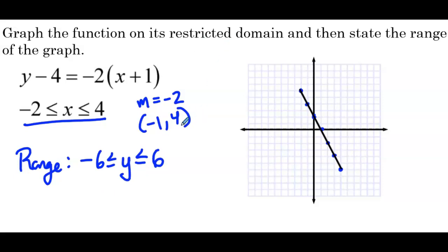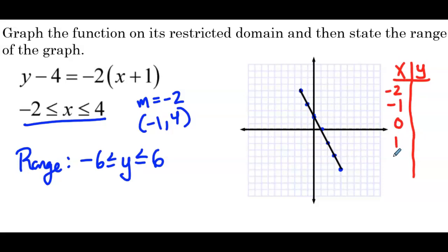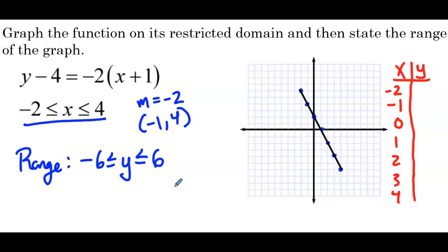We could have approached this differently by setting up a table of values with x from negative 2 to 4, plugging each into the function. But weigh those two options: using point-slope form to identify the slope and point and graphing only within the domain was more efficient than filling out the table. They're both correct, but one way is definitely more efficient and will save you time.